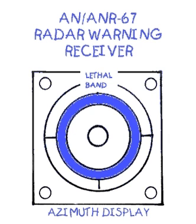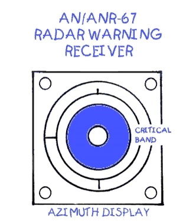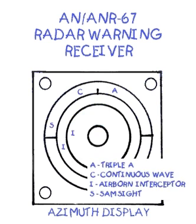Closer to you is the middle band, or the lethal band. Contacts in the inner band, or critical band, represent an immediate threat and demand quick, responsive action. The Radar Warning Receiver displays the possible type of contacts by using the following symbols.